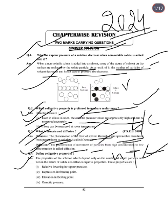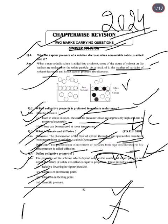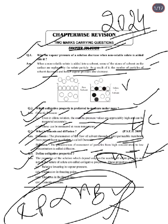Next: Define colligative properties. Colligative properties are those properties of a solution which depend only on the number of solute particles, not on the nature of solute particles. There are four colligative properties: relative lowering of vapor pressure, elevation in boiling point, depression in freezing point, and osmotic pressure.